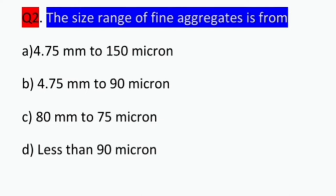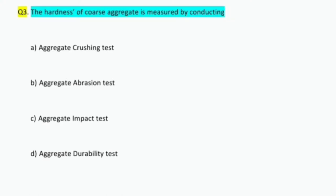Question number two: the size range of fine aggregate is from? The question is asking what is the size range of sand. As per IS code, the size range of sand particle should not be less than 150 micron and should not be more than 4.75 mm. So answer is A: 4.75 mm to 150 micron.